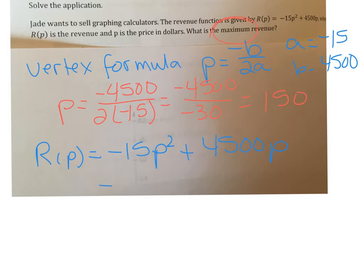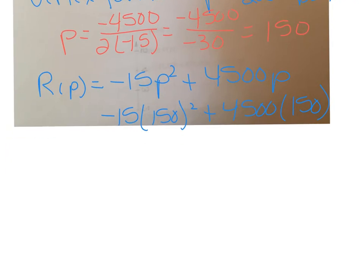So that would be -15 times 150² + 4500 times 150. And obviously with these numbers, you're going to use a calculator and you're going to get -337,500 here plus 675,000. When you add those, you get 337,500.